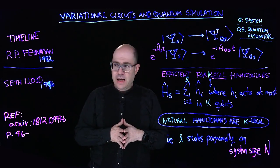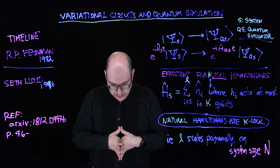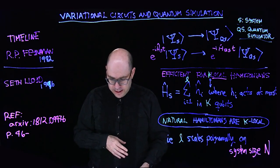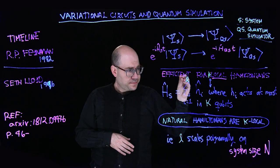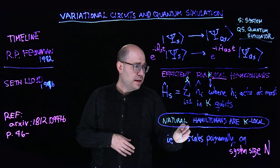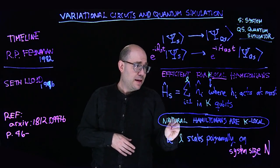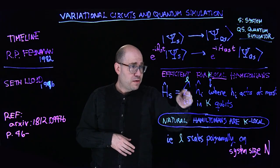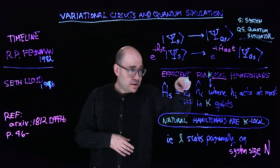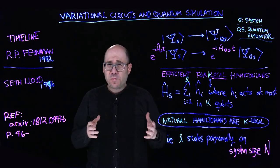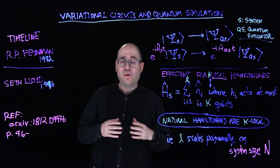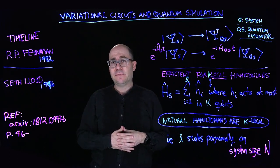So the important result from Seth Lloyd is that these Hamiltonians can be implemented efficiently and it is because the number of terms L scales polynomially on the system size N. And usually it's a low polynomial order 4, for example, for applications that I really like.